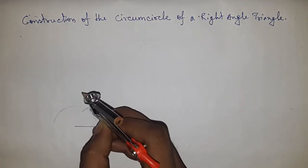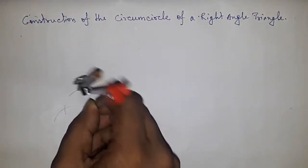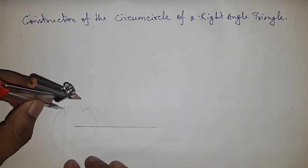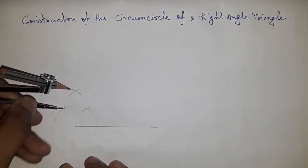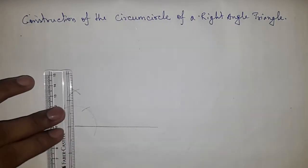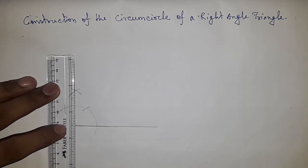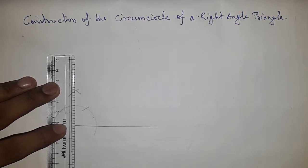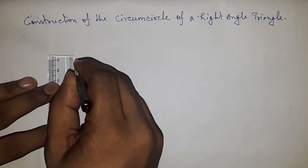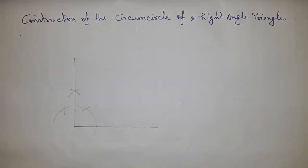And putting the compass here and cut the arc same. Okay, and putting the compass here and cut the arc by this way. Now joining this two point, by joining this point we get 90 degree angle okay.